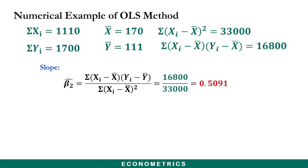For the regression coefficient, using the formula for calculating the slope coefficient, we substitute the sum of the product of the deviations of x and y — 16,800 — and divide by the sum of the squared deviations of x — 33,000 — and we get the slope to be 0.5091.